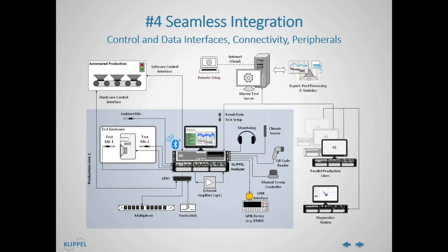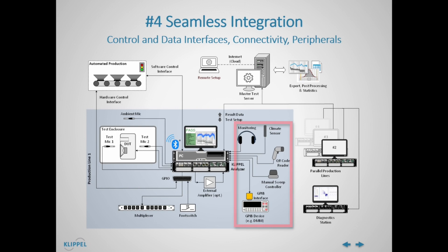Trouble-free integration of one or multiple test systems with higher-level processes such as a process control framework is mostly a matter of smooth connectivity and flexible interfaces. The Clipple analyzer as a scalable, sturdy, and reliable test frontend is the central component of most test setups. In addition to providing the in-and-output terminals for microphones and other sensors, external amplifiers, and the device under test, it provides a digital I/O to interface with external control hardware or to connect through switches, routing switchers, or signal towers. Additional peripheral devices such as monitoring headphones, climate sensors, manual sweep controllers, Bluetooth interfaces, external test instruments, and many more can be connected to the host PC and controlled via the QC software, which in return provides software interfaces for control and result access. The test sequences, limits, and results for multiple production lines can be synced via a central server or cloud drive to be modified and monitored remotely.